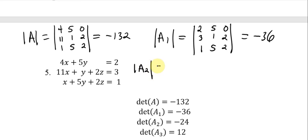The determinant for A sub 2: replace the second column with 2, 3, 1, and that will give you negative 24.